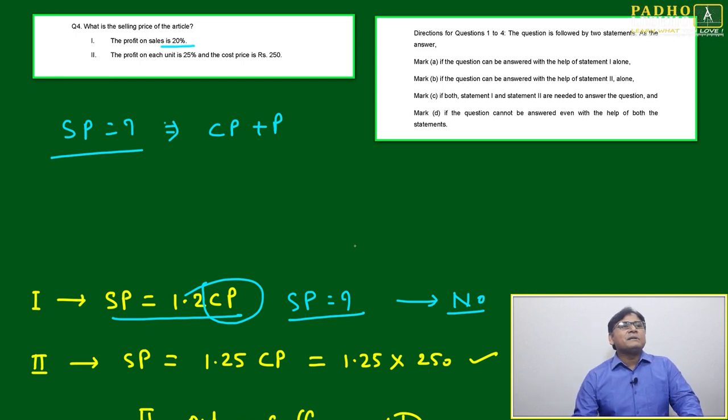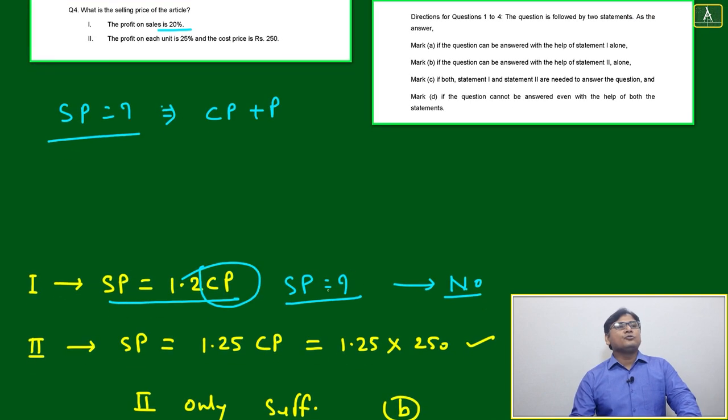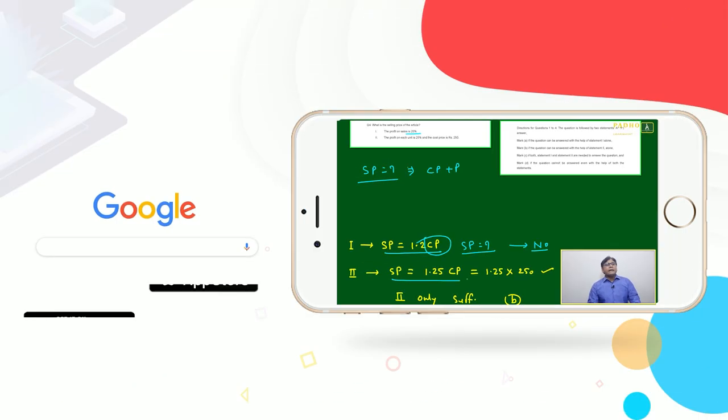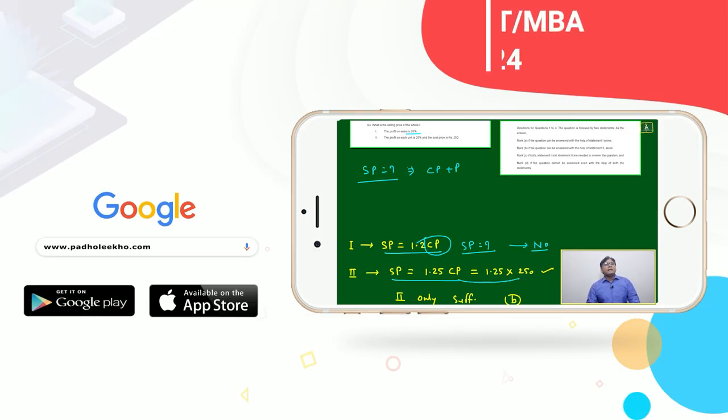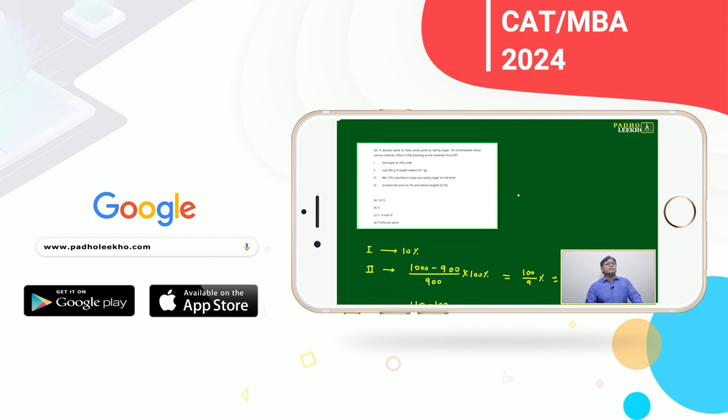Statement II: The profit on each unit is 25 percent and cost price is 250 rupees. Now here it is given 25 profit and cost price also given, 250. This is sufficient, means we can mark B, because Statement II alone is sufficient.